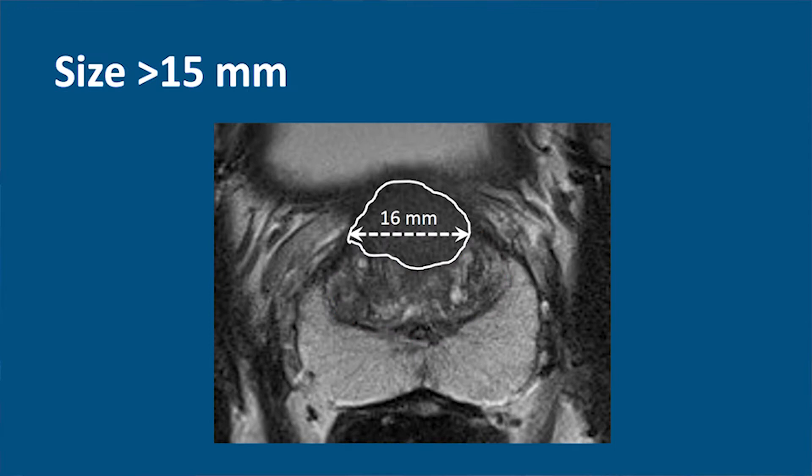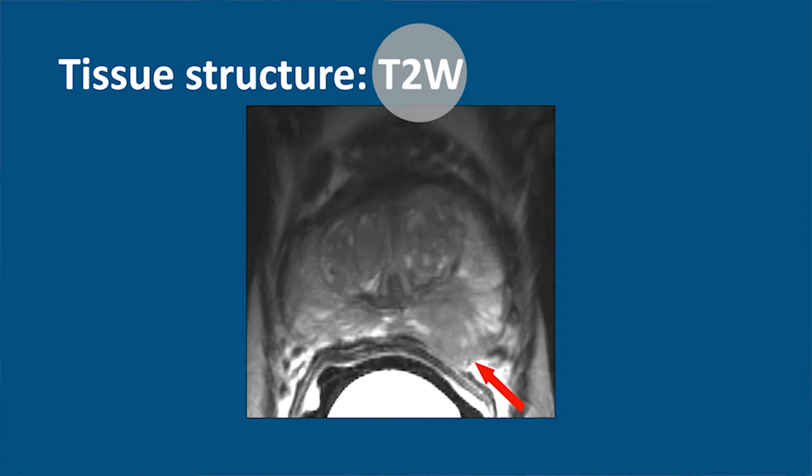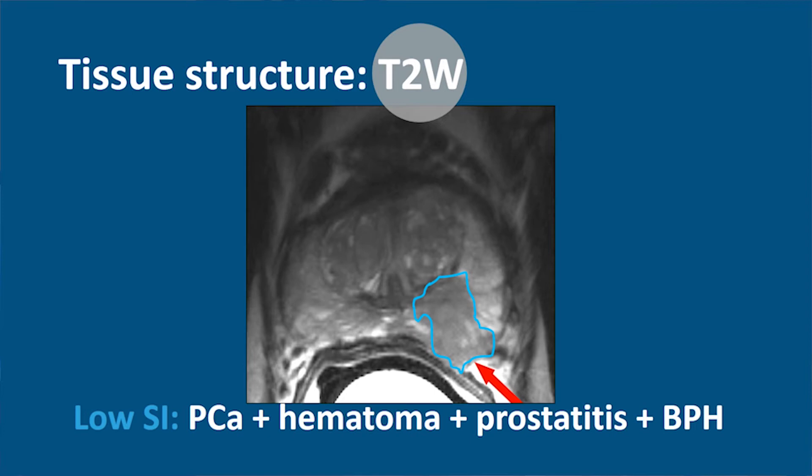When it's a large lesion, we call it a PI-RADS 5 — but I will come to that a little later. On a T2-weighted image, you can see an abnormality in the peripheral zone. But tissue structure alone cannot tell you whether it's prostate cancer, a hematoma, prostatitis, or BPH. There is no separation, so for this you need another technique.